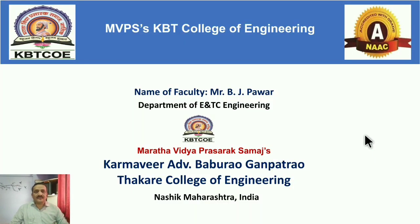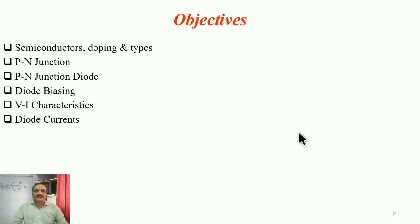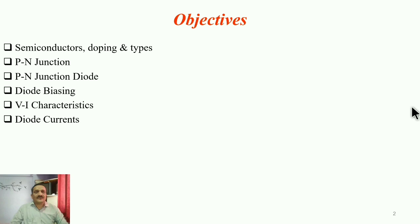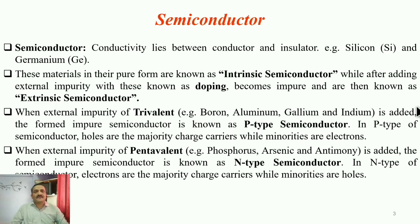Welcome everyone. Today we will start the next topic: semiconductor PN junction, the various devices, and their applications. The objectives for today's session are: what is meant by semiconductors, the doping term, various types of semiconductors, PN junction, PN junction diode, diode biasing, VI characteristic, and diode currents.